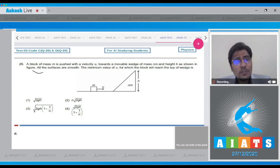In question 26, a block of mass m is pushed with a velocity u towards a movable wedge of mass nm and height h as shown. All the surfaces are smooth.